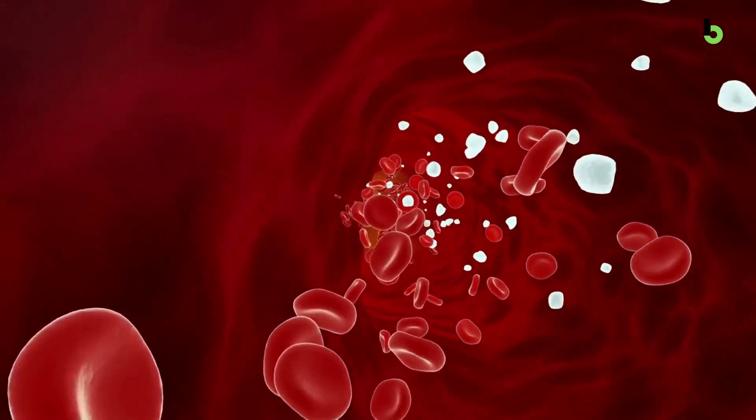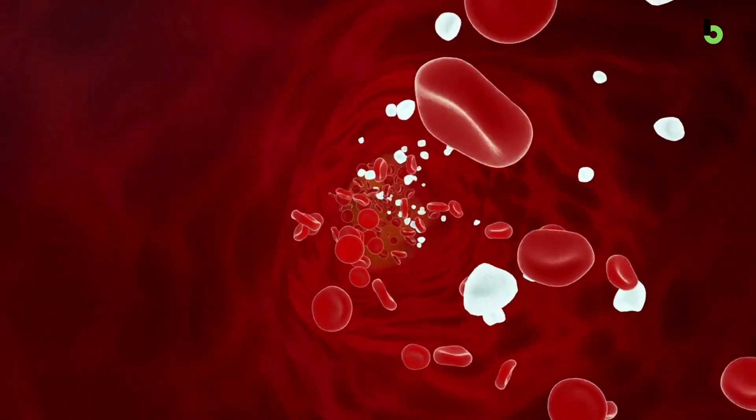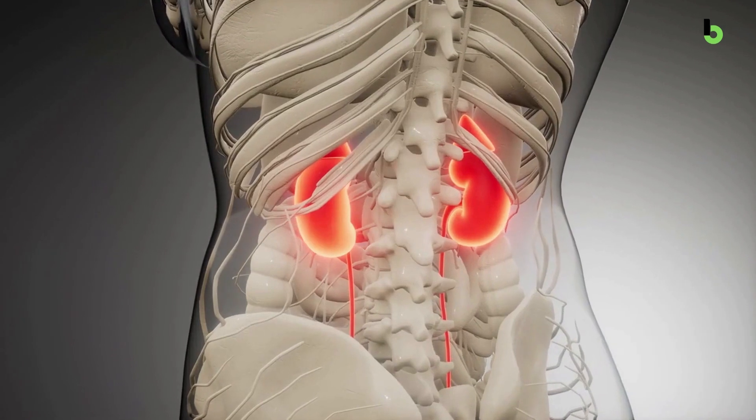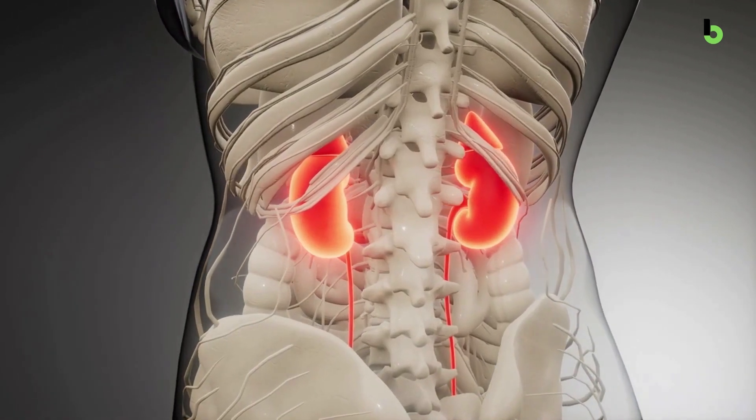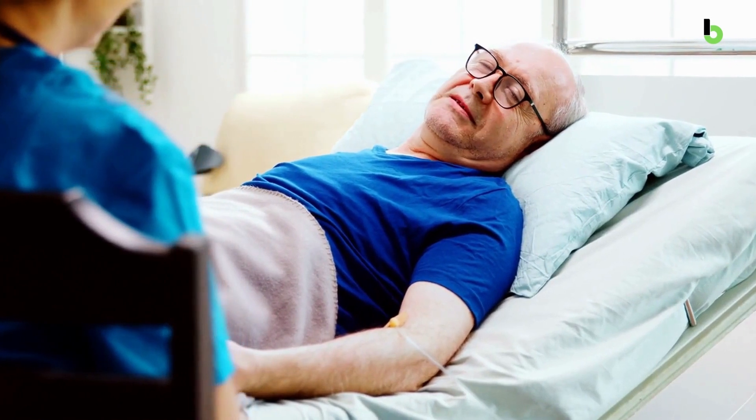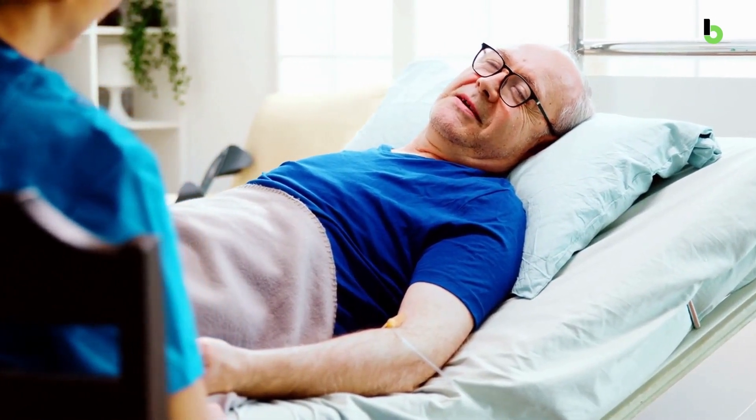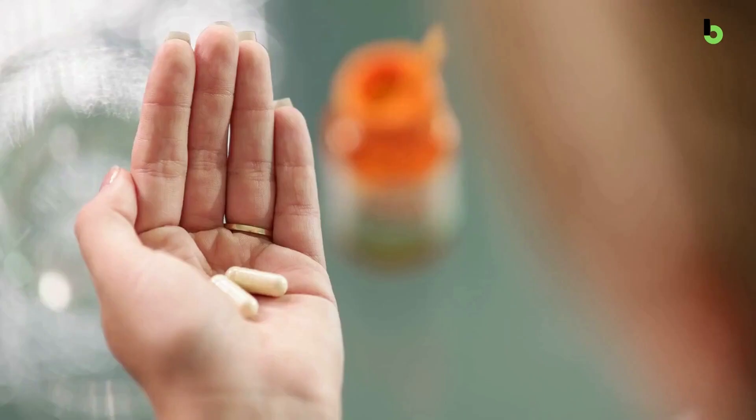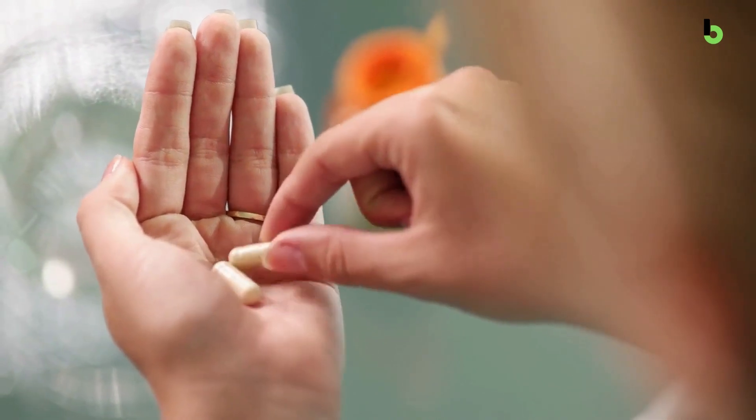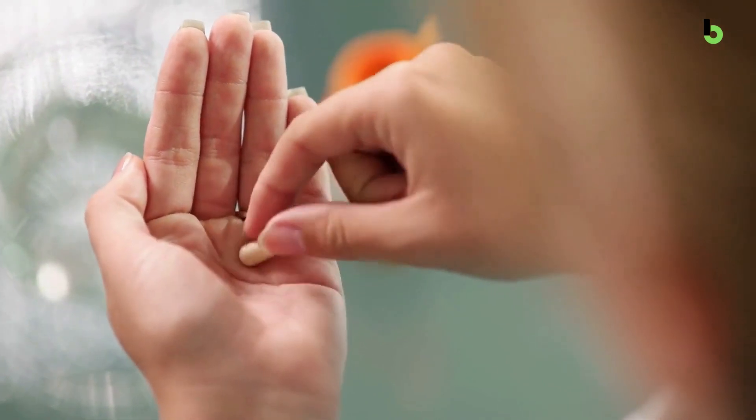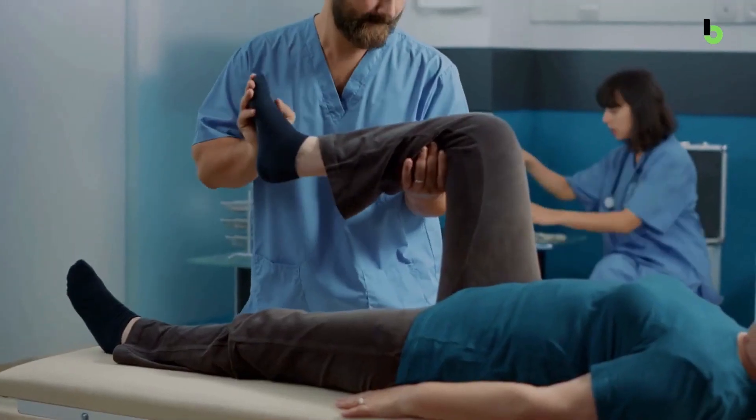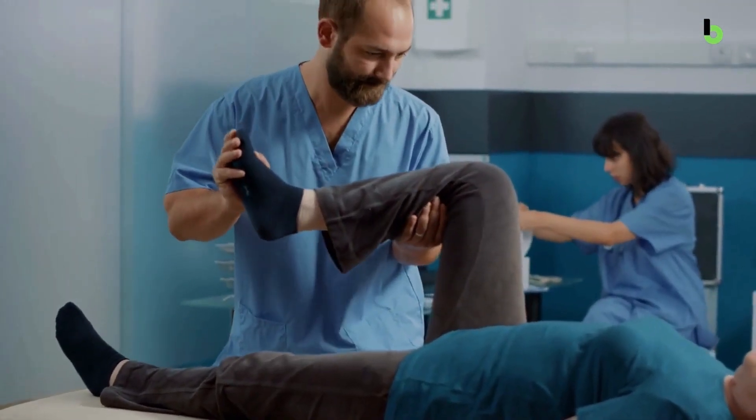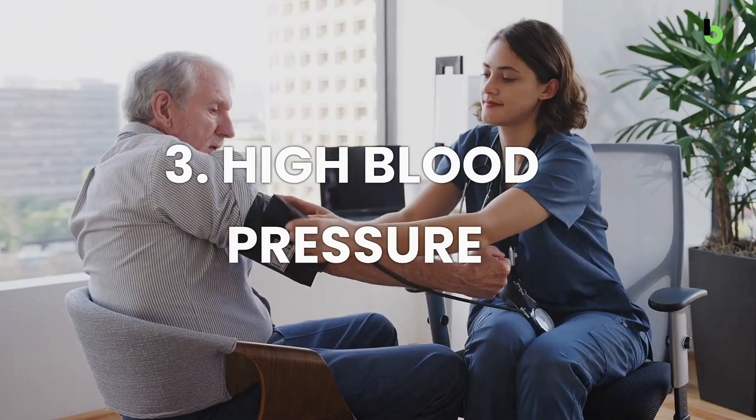They can reduce blood flow to the kidneys by constricting the blood vessels that supply them. This can reduce the kidneys' ability to function properly and increase the risk of kidney damage. Prolonged use of these drugs can cause inflammation and scarring in the kidneys. Overusing the drugs can lead to a temporary loss of kidney function and increase the risk of developing chronic kidney disease. Don't be afraid to use these drugs if you need them, but be cautious and stay within the recommended dose range. Consider using other pain relief methods such as heat therapy and physiotherapy.